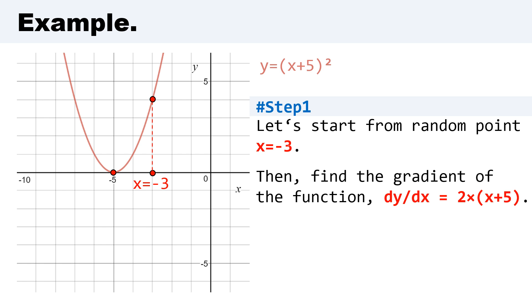We can calculate the derivative of this function by moving the degree of argument to the beginning between brackets. We have 2×(x+5), and this is the gradient of the function.